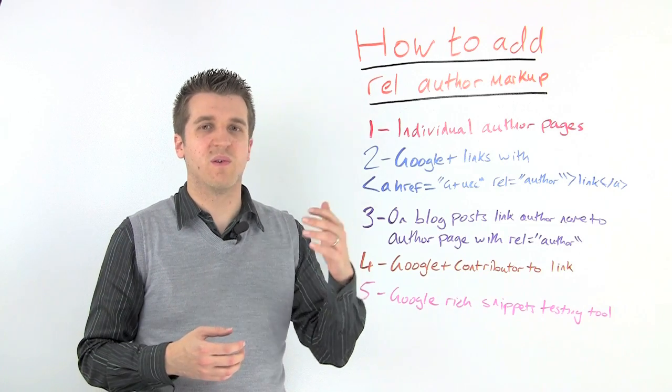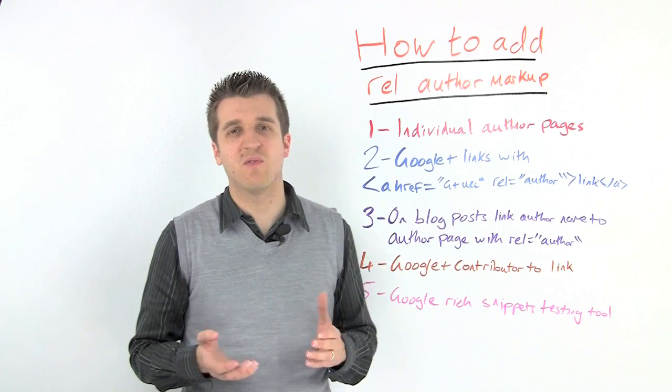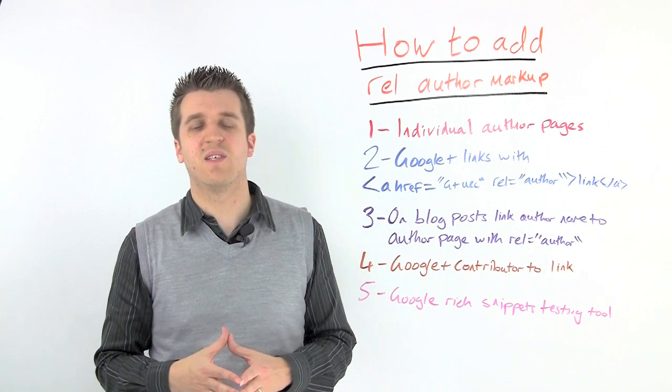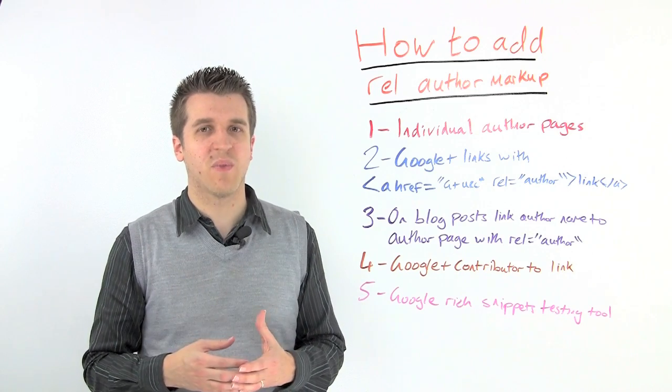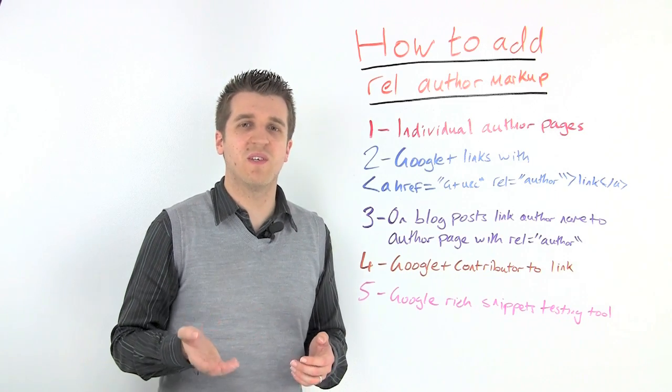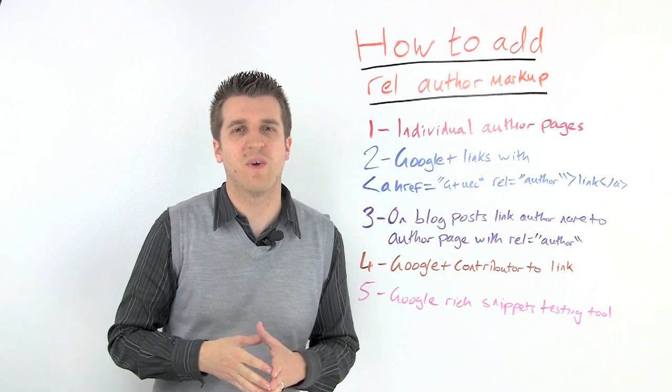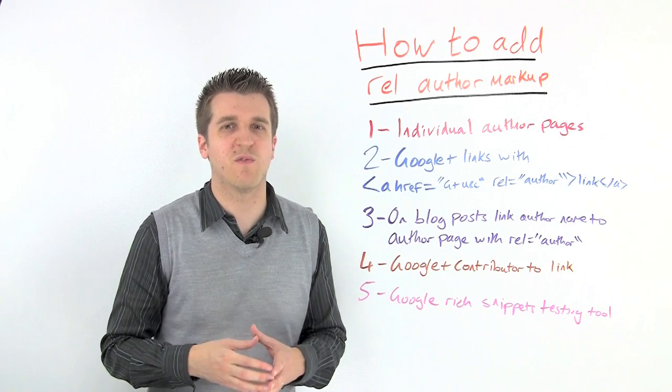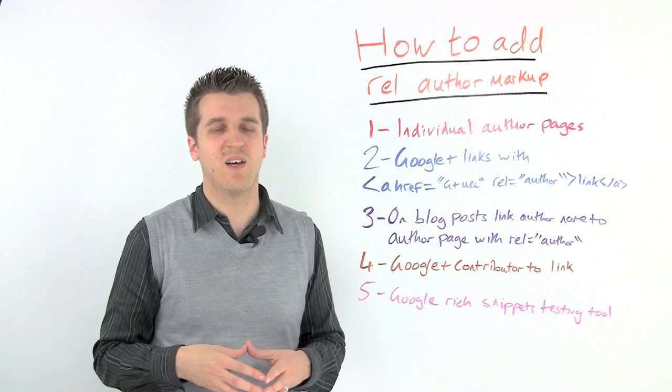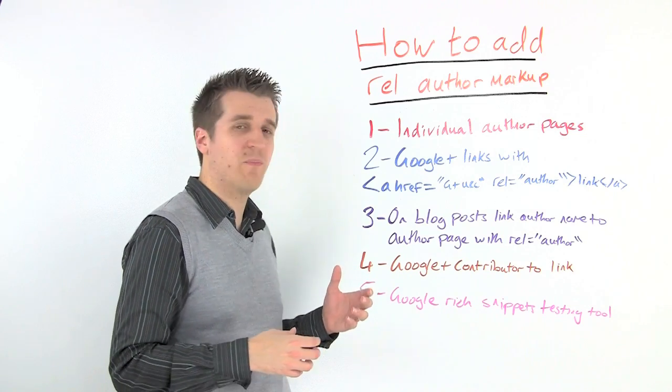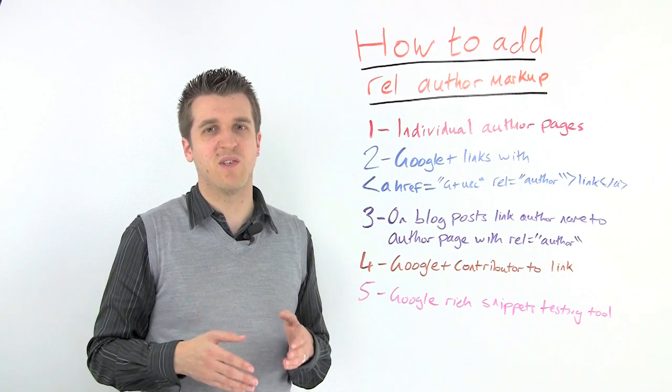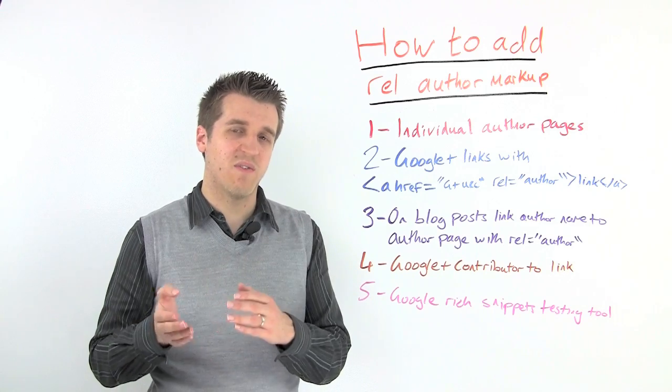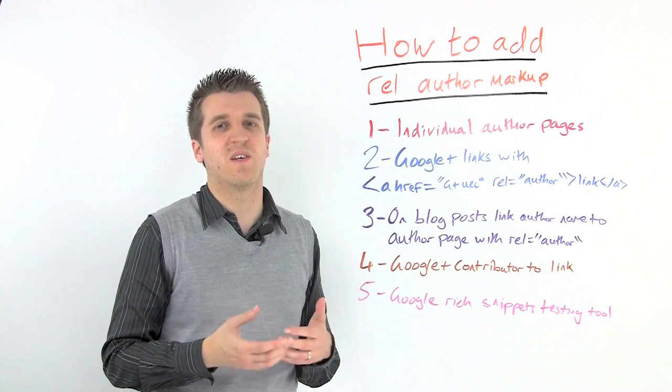Once you've done that for all of your authors, you're effectively done, and it's really just a waiting game then to see how long it will take Google to incorporate this into their results. For us personally, when we first did this, it was over a year ago, and it took around about three months for the information to appear in the search engines. The last time we did it, within 24 hours, all 20 authors appeared with their information in the search results, so they are a lot faster now, and generally the waiting time isn't very long.